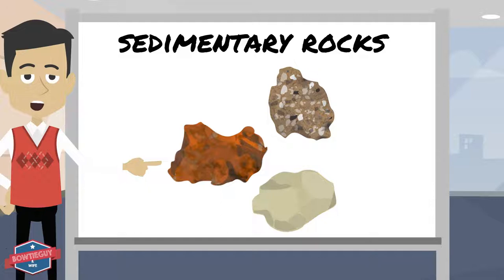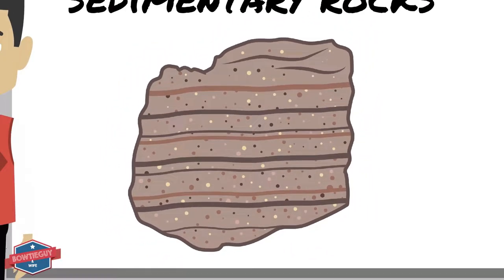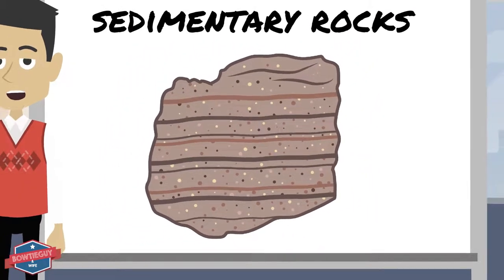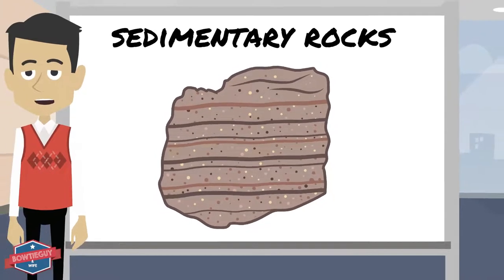Examples of sedimentary rock include limestone, sandstone, shale, and conglomerate. If you take a look at this sample, you can see the layers of sediment that have been pressed together over the course of time to form sedimentary rock.